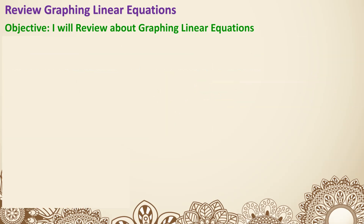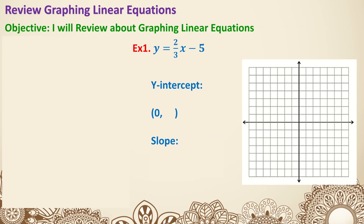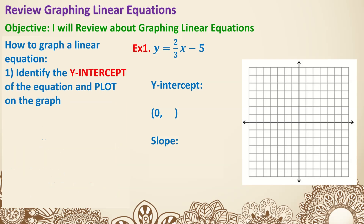Okay, so let's get to some examples. Here's the first example: y equals two-thirds x minus five. The first thing we need to do is identify the y-intercept. Since the equation is y equals mx plus b, the b number gives us the y-intercept. Right now b is negative five, so the y-intercept is (0, negative 5). The reason it's (0, negative 5) is because it's on the y-axis, and anything on the y-axis has an x-coordinate of zero, because we're not going left or right.